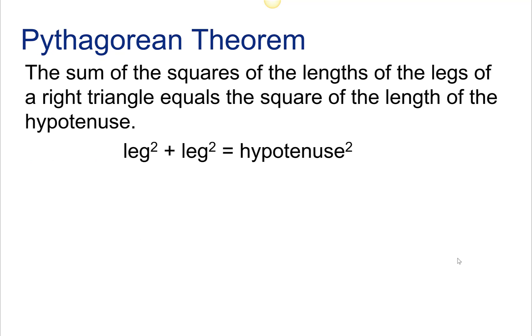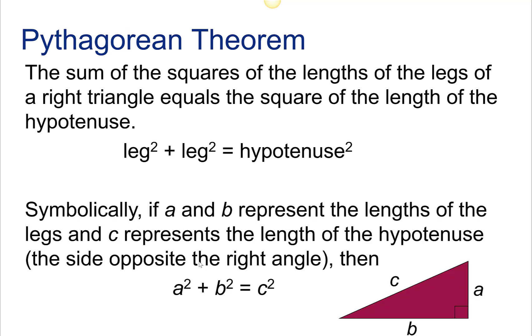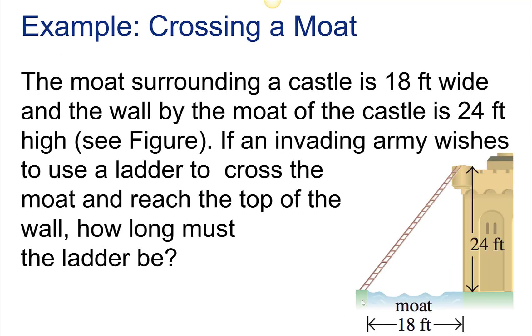The Pythagorean theorem: the sum of the squares of the lengths of the legs of a right triangle equals the square of the length of the hypotenuse. Leg squared plus leg squared is hypotenuse squared. Some people remember A squared plus B squared is C squared. C is the longest side of the triangle, opposite to the right angle. A and B are the shorter sides, or the legs of the triangle.